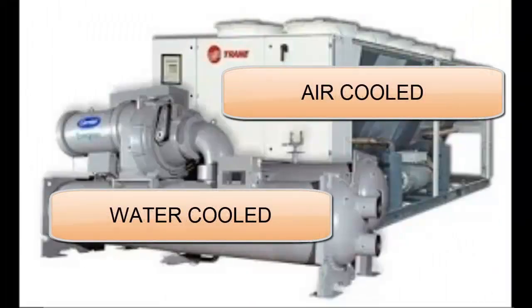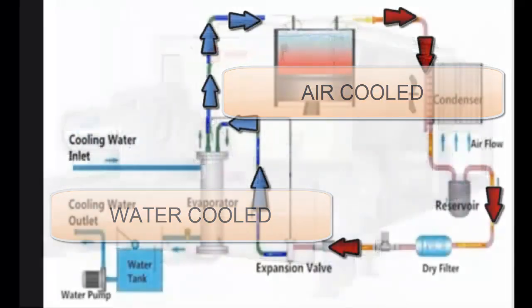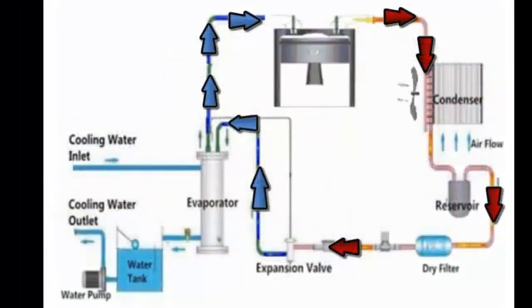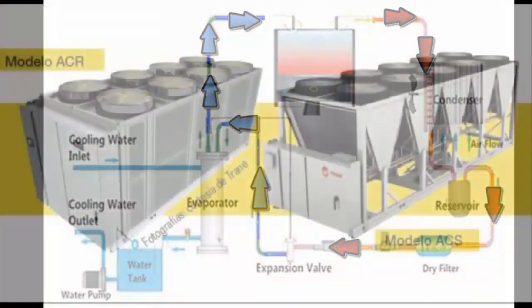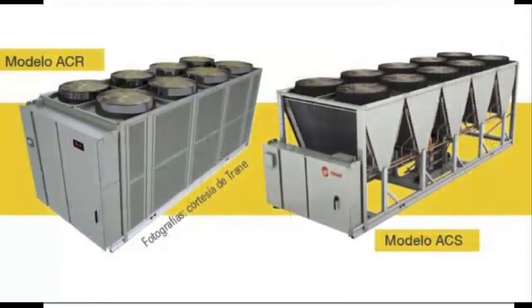Question 5: What are the types of chillers? By the type of condenser cooling, we can classify them into: A. Chiller with air-cooled condenser. B. Chiller with condenser cooled with fresh water.